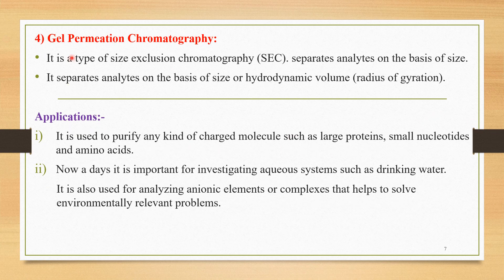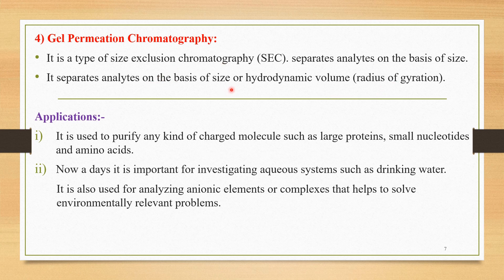The fourth important type is gel permeation chromatography. It is a type of size exclusion chromatography (SEC) that separates analytes on the basis of size — specifically, the hydrodynamic volume, also called the radius of gyration. So the two key criteria for separation are size and hydrodynamic volume.